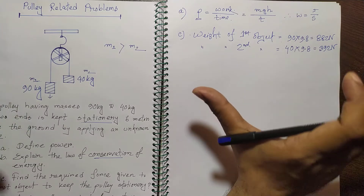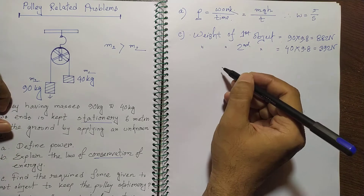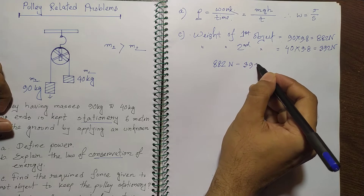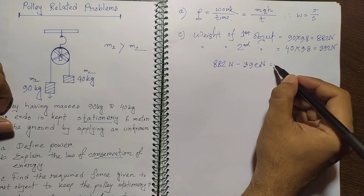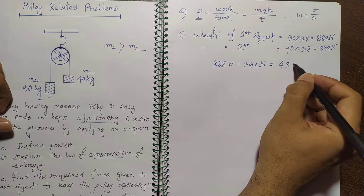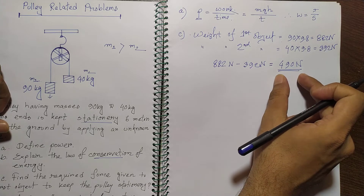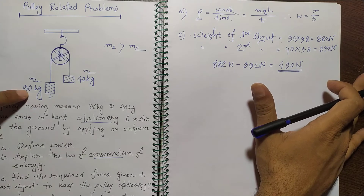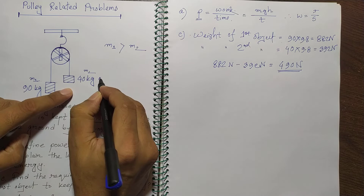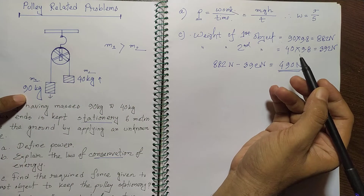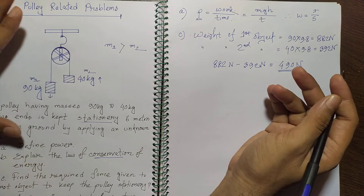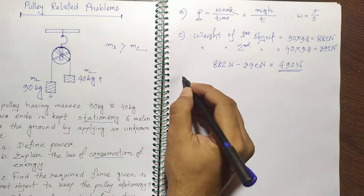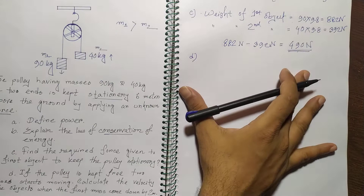The required force is simply the difference between the two weights: 882 newtons minus 392 newtons equals 490 newtons. This is the force required to keep the pulley stationary, because the 90 kg mass pulls downward and the 40 kg mass must be balanced upward.